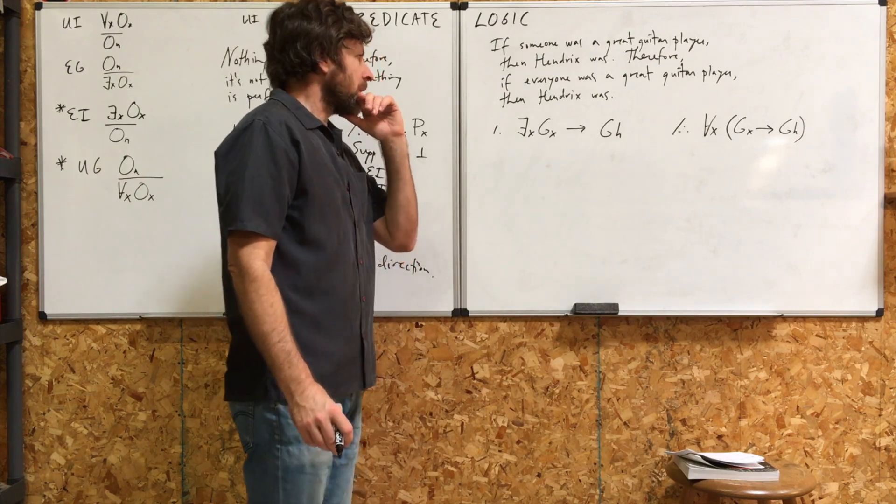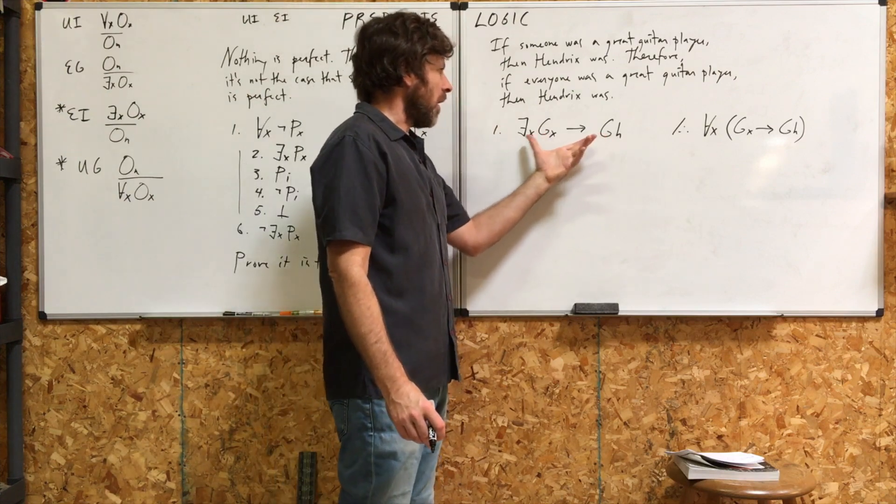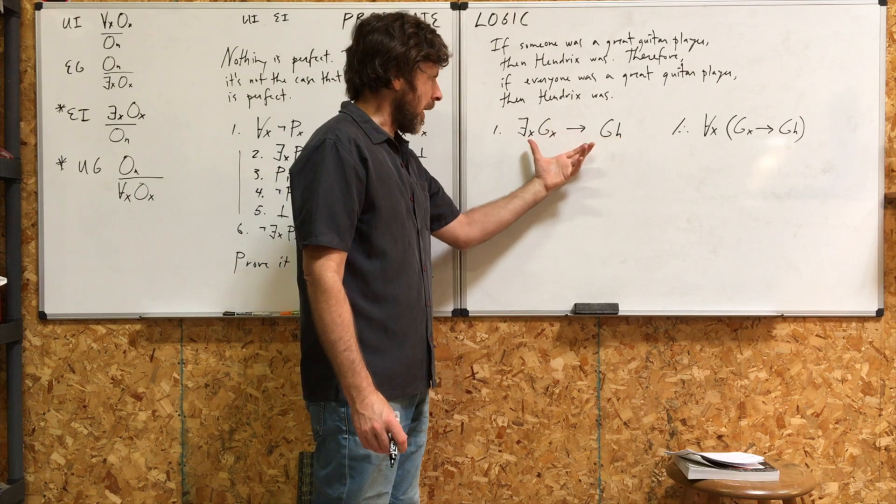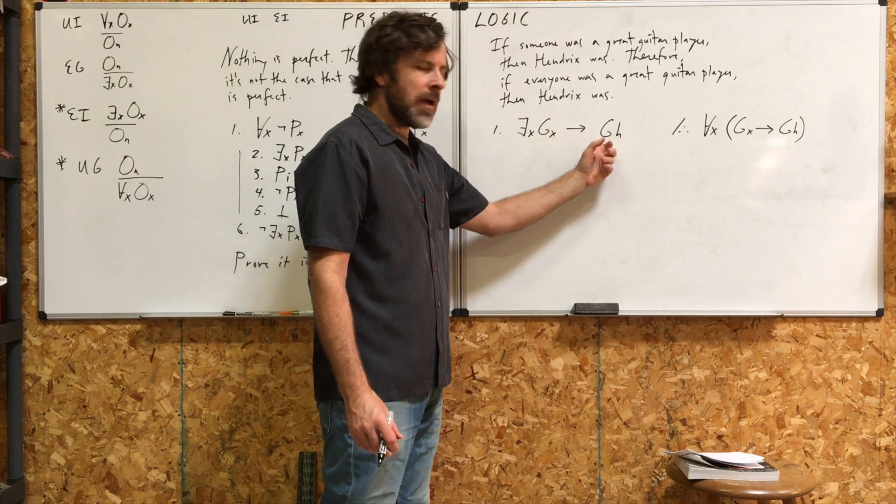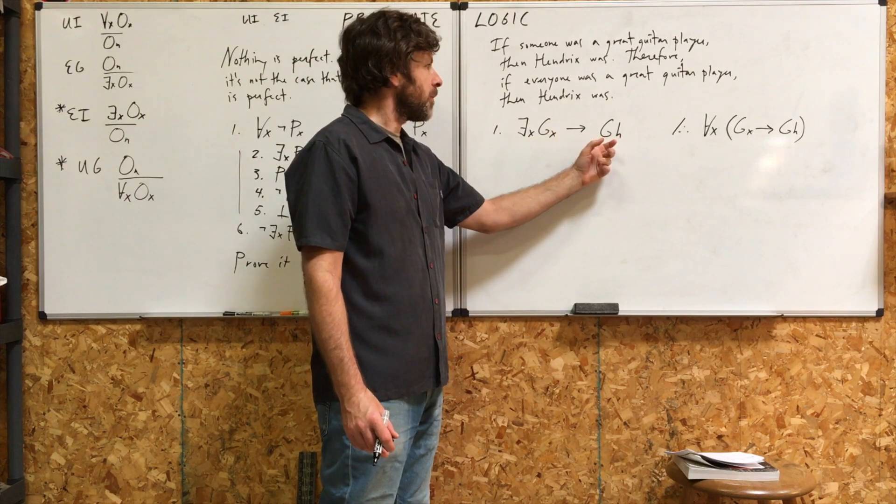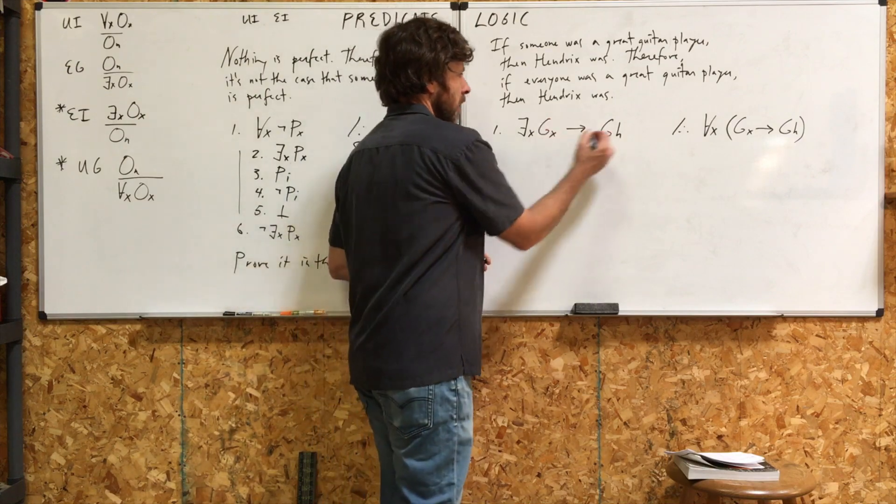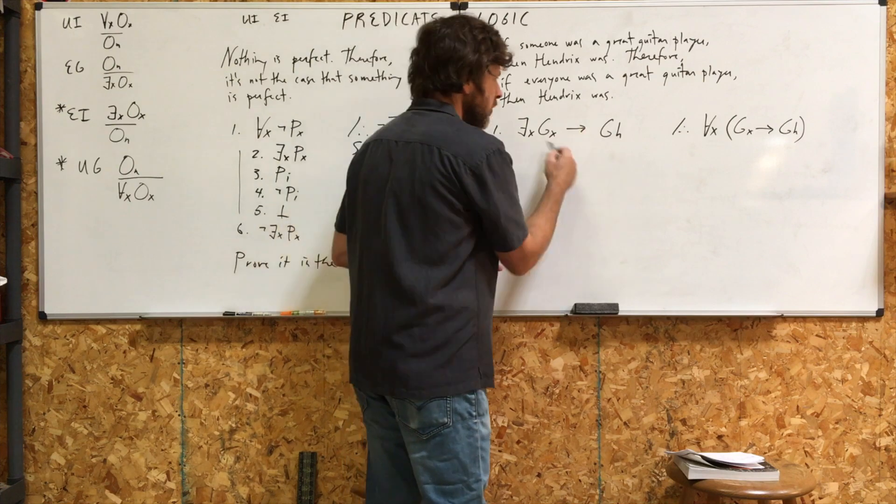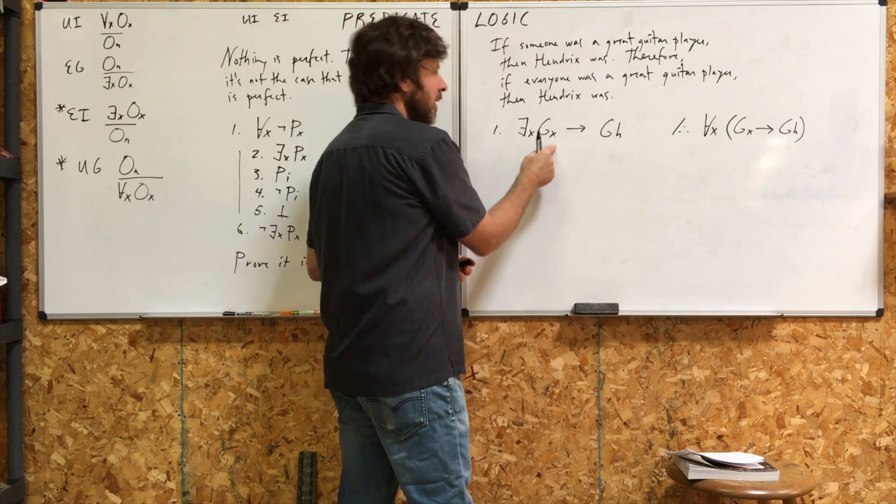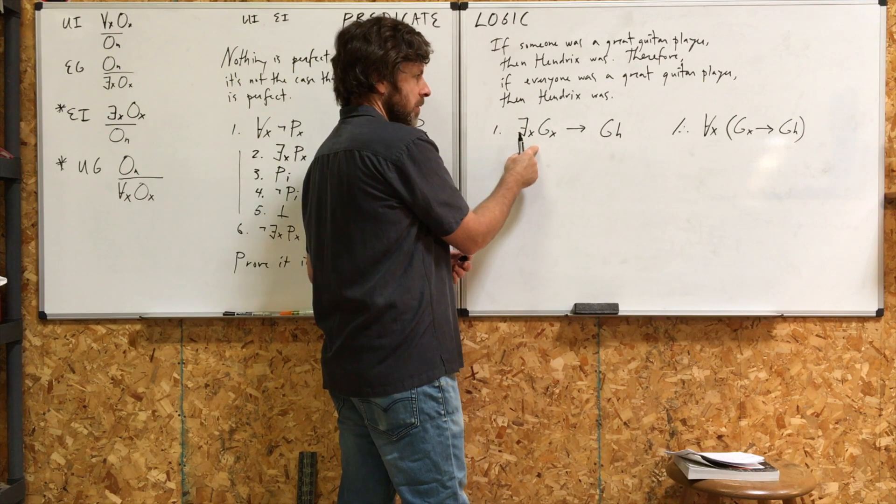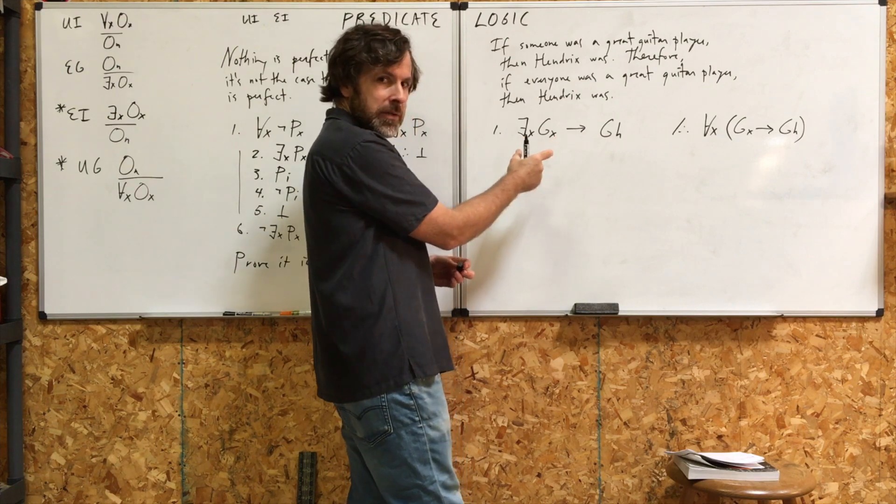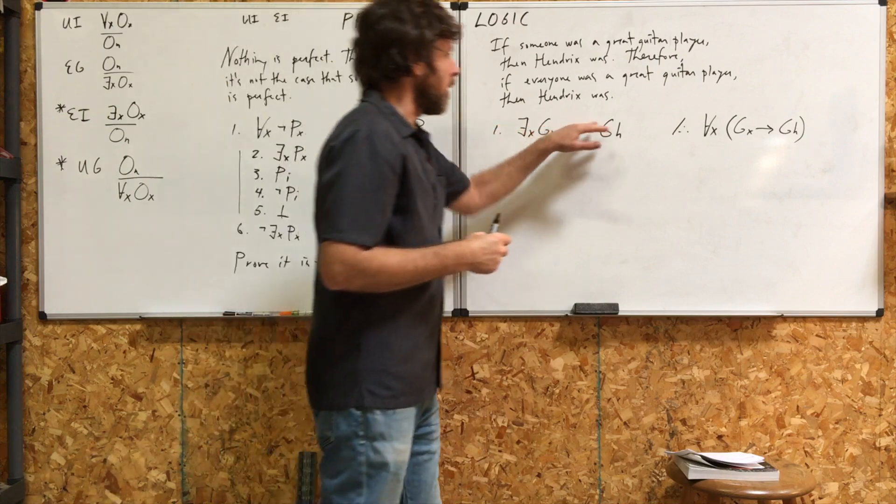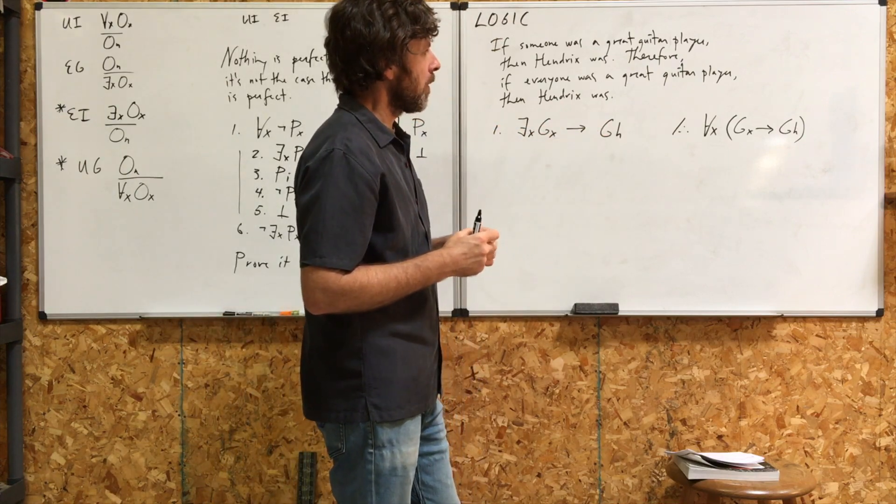First of all, you can't use EI on this whole statement right here. Why? Because as stated right here, as symbolized, this is not an existential quantification. Now, if there were parentheses right here, then it would be an existential quantification. But actually, right here, we have a conditional statement whose antecedent is an existential quantification. You can't just use EI on just a piece of this. It has to apply to the whole line. So, we can't use EI on this correctly.